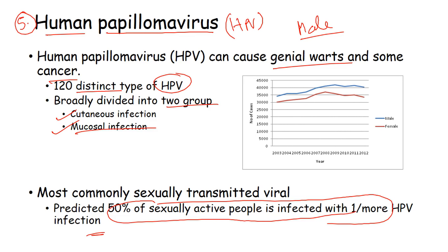Why are STDs dangerous? Not only can they kill you, but they change social conventions and can be transferred from you to your child, meaning many more people get infected. To be a perfectly healthy human being — especially with multiple sex partners — use a condom. That is the key message of this video. I hope this video helps you. Thank you.